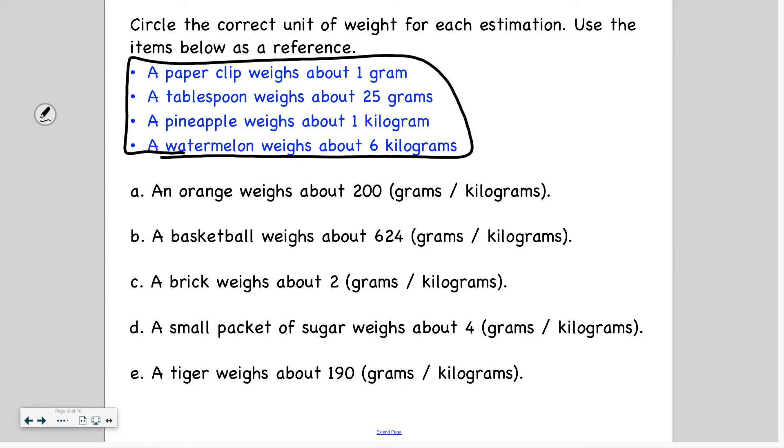So let me do the first one for you. An orange weighs about 200 grams or 200 kilograms. Well, an orange definitely weighs less than a pineapple. And a pineapple is 1 kilogram. And I remember that 1 kilogram is 1,000 grams. So it can't be 200 kilograms. That'd be way too much. I'm going to go with 200 grams.